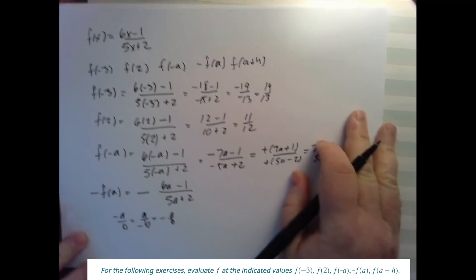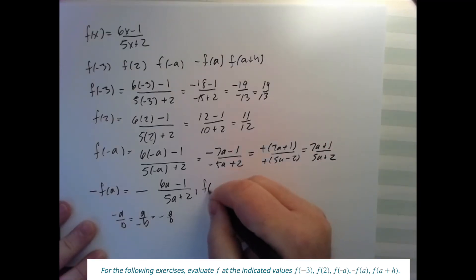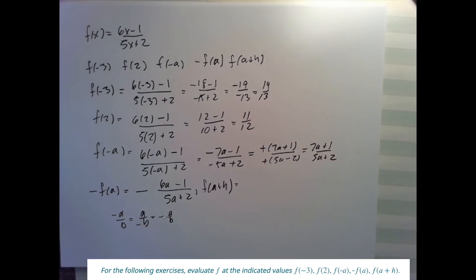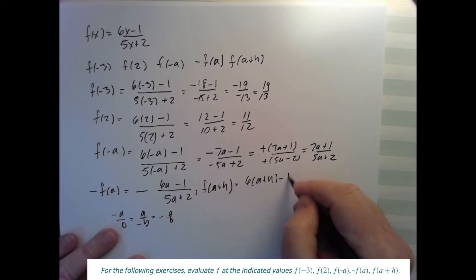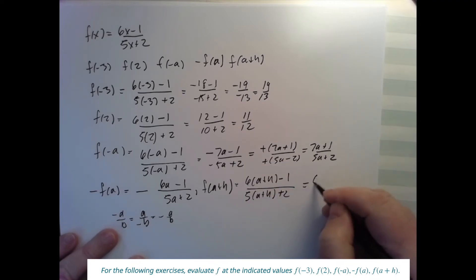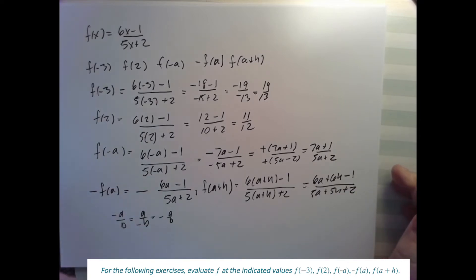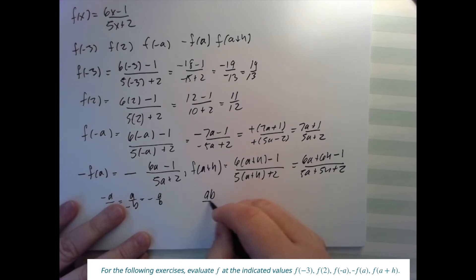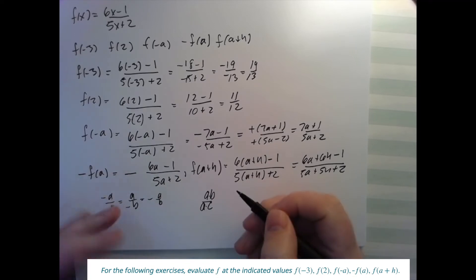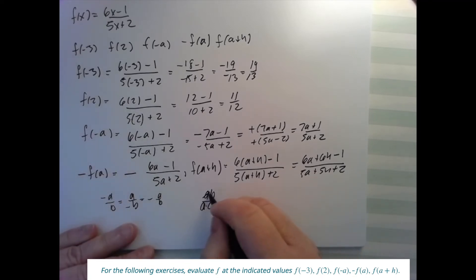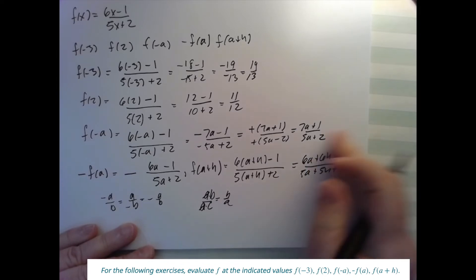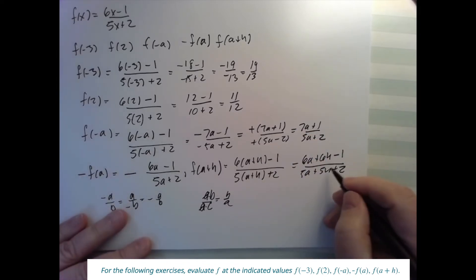Now we want to plug in this thing right here. So let's just squeeze it in. f of a plus h. So again, whatever we get, we plug it in for the x. So I have six times a plus h minus one over five times a plus h plus two. Simplify that to 6a plus 6h minus one over 5a plus 5h plus two. Can I divide anything out? No, because the rule is right. a times b over a times c. What's the operation between them? It's multiplication, not addition. So that's when you can divide out, get b over c. I can't divide anything out here because I have these pluses and minuses and that's just not the way it works.